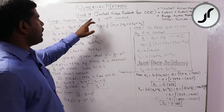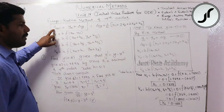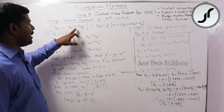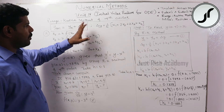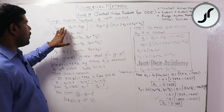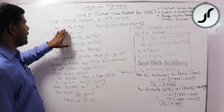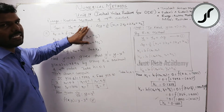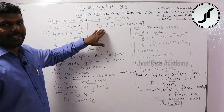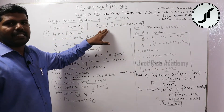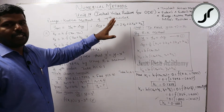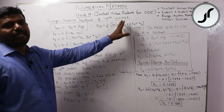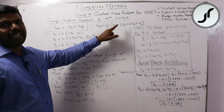The Runge-Kutta method of fourth order formula: y_(n+1) is equal to y_n plus delta_y. For all RK method problems, y_(n+1) equals y_n plus delta_y, where delta_y equals 1/6 into (k1 plus 2k2 plus 2k3 plus k4).